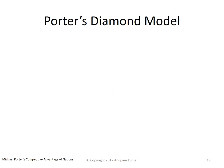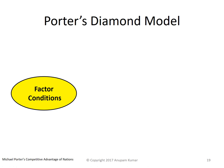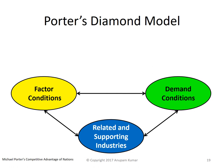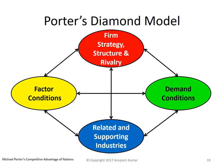So, as per Porter's diamond model, we have the factor conditions, which are based on the nation's resources; the demand conditions, which depend on the kind of customers available within a nation; the related and supporting industries and its interplay with the firm's strategy; and the structure and rivalry. As per Michael Porter, these four factors together lead to competitive advantage of a nation.